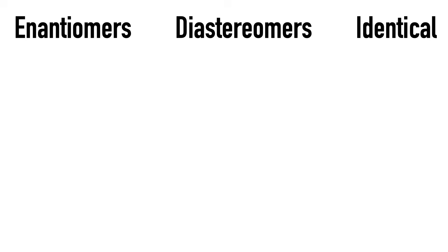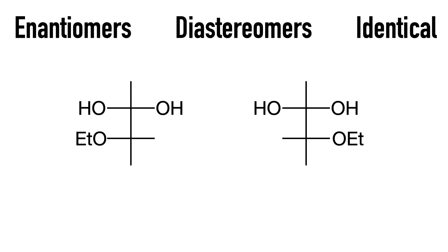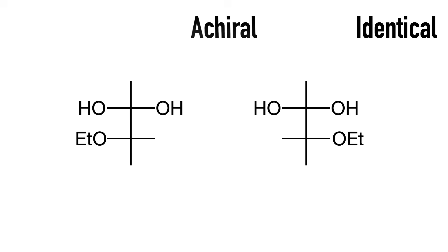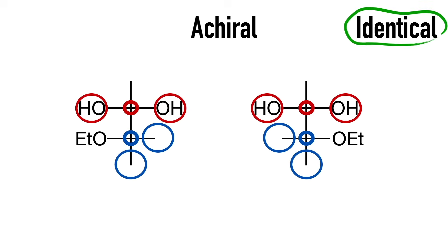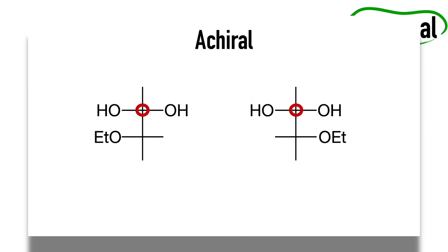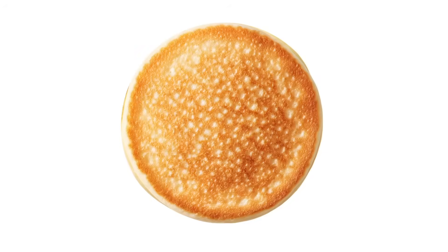And one more trap to look out for. Even though these look like mirror images at first glance, be careful — they're not enantiomers or diastereomers, because they're achiral. The carbons that look chiral at first glance each have two of the same substituents. But they do have the same molecular formula and same connectivity, so they're identical. So look out for molecules that look chiral at first glance but are actually achiral, especially when the answer choice set has chirality-related terms like enantiomers and diastereomers. But don't let answer choice sets sway you — check for chirality before flipping pancakes.